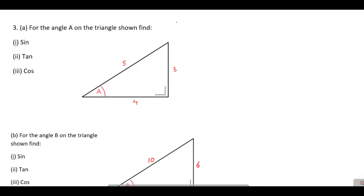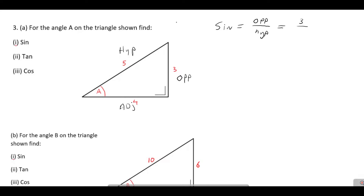So we label our sides first. The one opposite our right angle is our hypotenuse, the one opposite our angle is our opposite, and the one that's beside it but not the hypotenuse is our adjacent. We'll work out sine first — sine is equal to opposite over hypotenuse, so that gives us our opposite is three and our hypotenuse is five, so sine of A equals three over five.